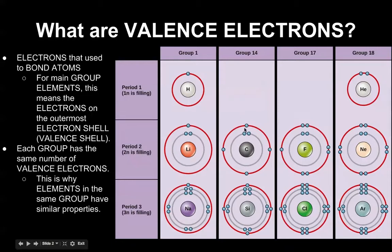Same with group 14 — they all have 4 on the outside. Carbon has 4, silicon has 4. Group 17: fluorine has 7, chlorine has 7. Group 18 gets a little trickier because helium has 2 on its outside shell, where neon has 8 and argon has 8. So helium is kind of the exception to the rule, but we'll talk more about that later.